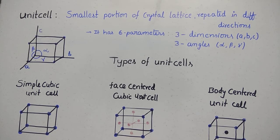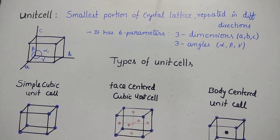Some examples of crystalline solids: NaCl (table salt) is the best example. Diamond and quartz are also examples of crystalline solids. But simple table salt is the best example.